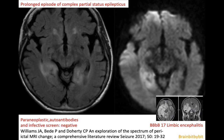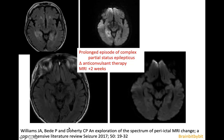You can have very extensive imaging abnormalities in the post-ictal and peri-ictal period. In one case, the changes were so extensive that encephalitis was considered, but all paraneoplastic autoantibodies and the infective screen were negative. Anticonvulsant therapy was changed, and two weeks later the MRI had returned to normal.